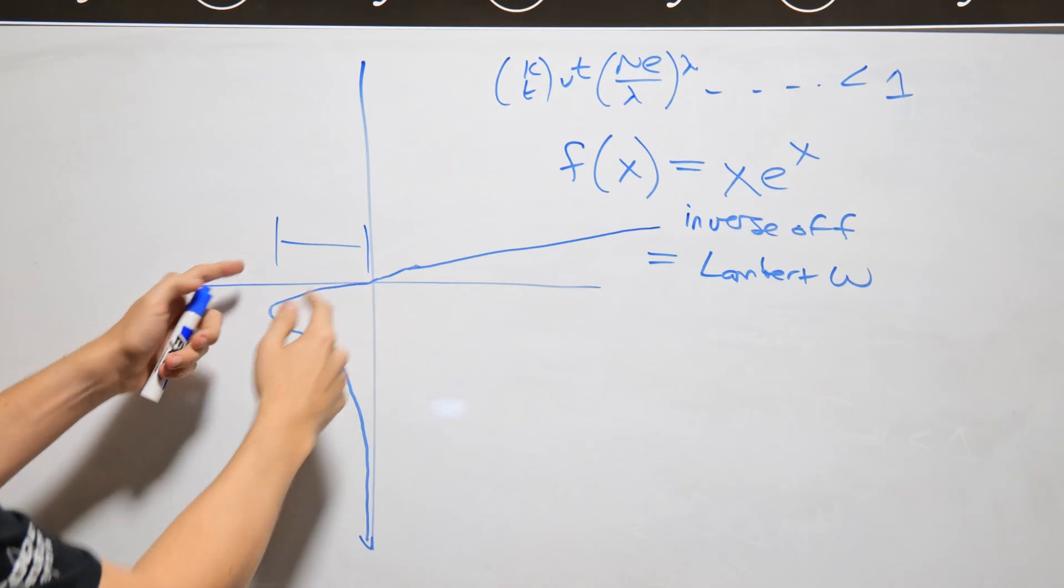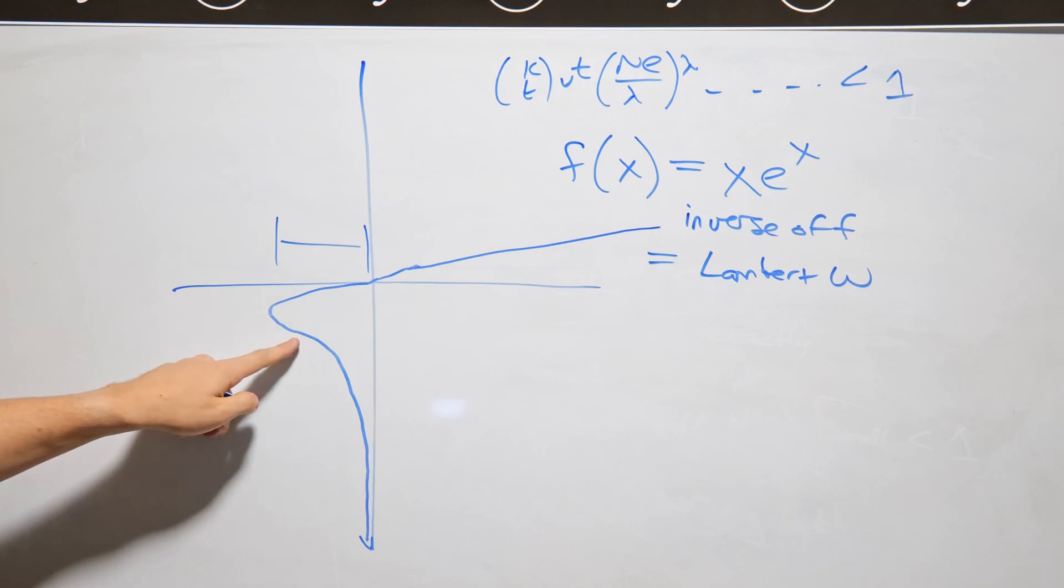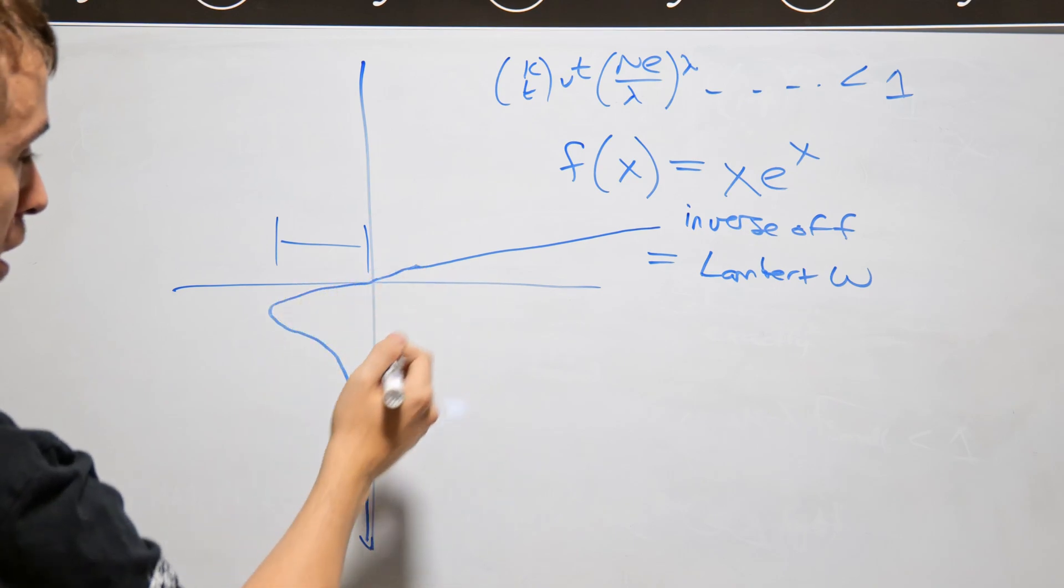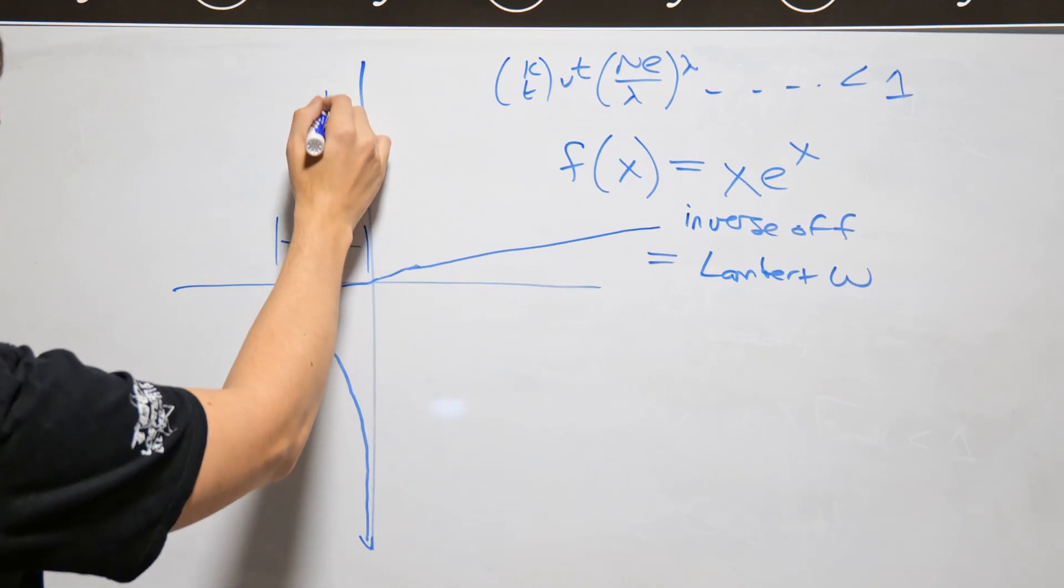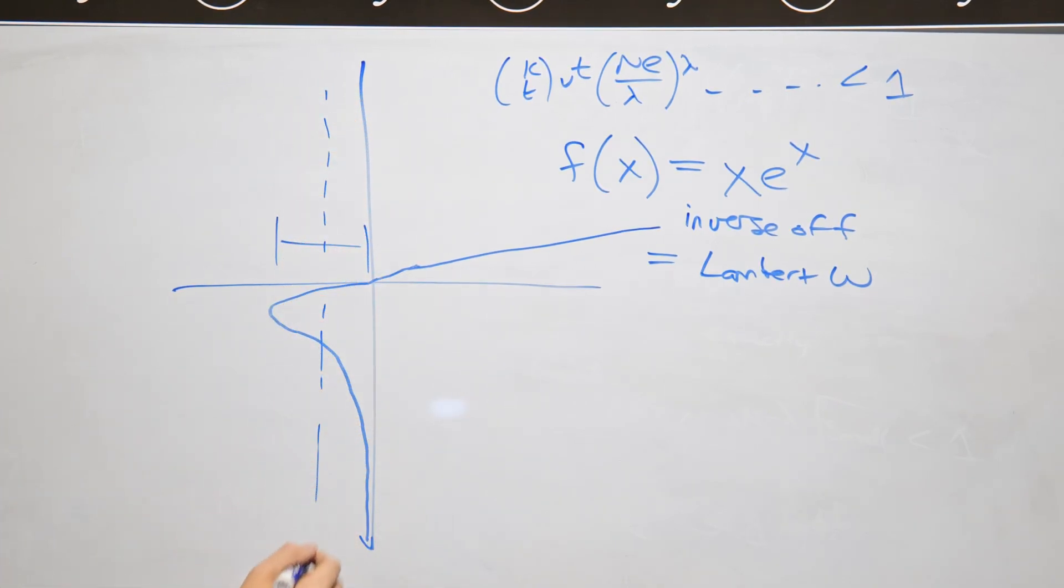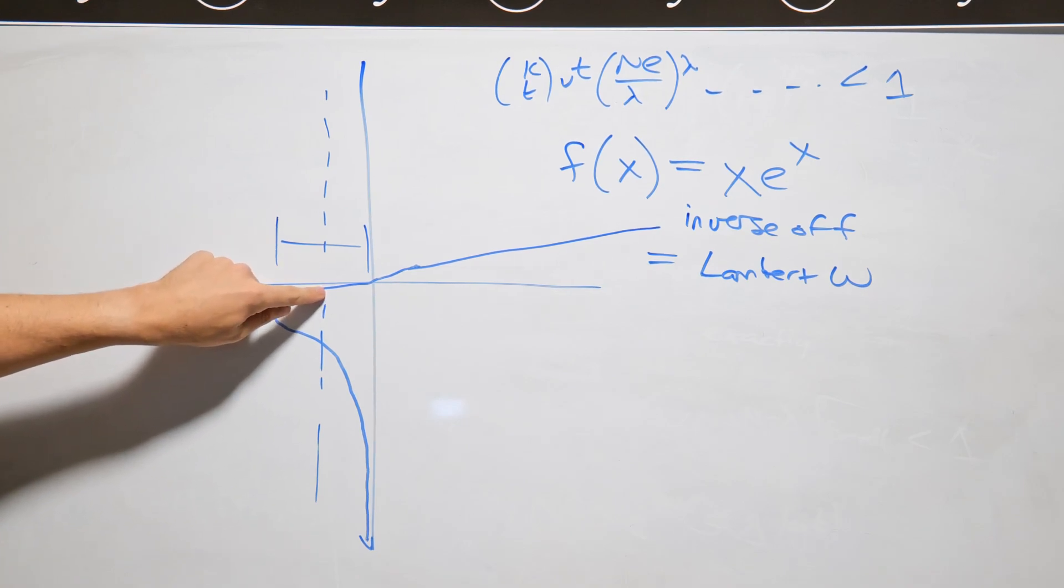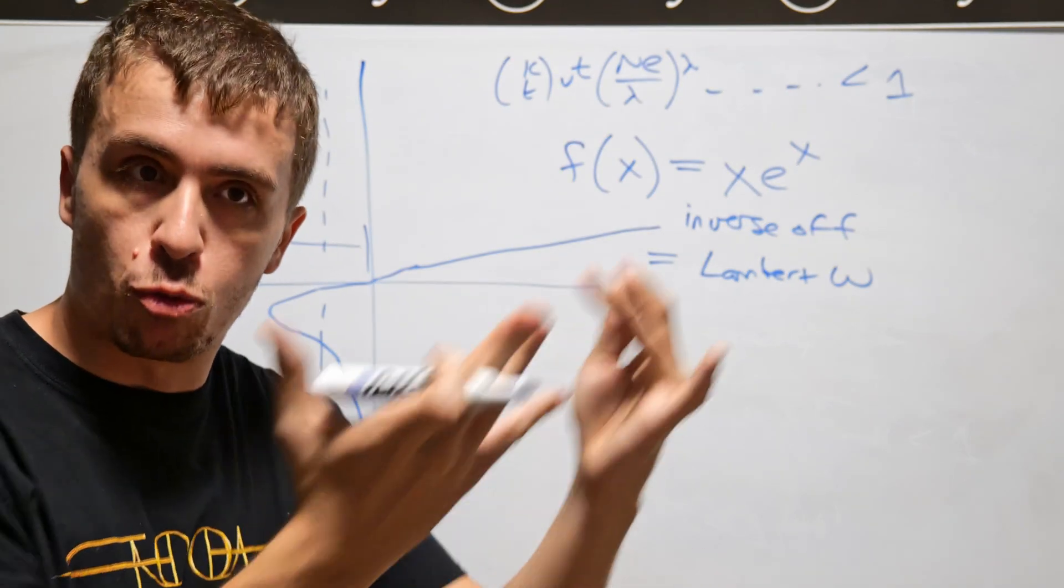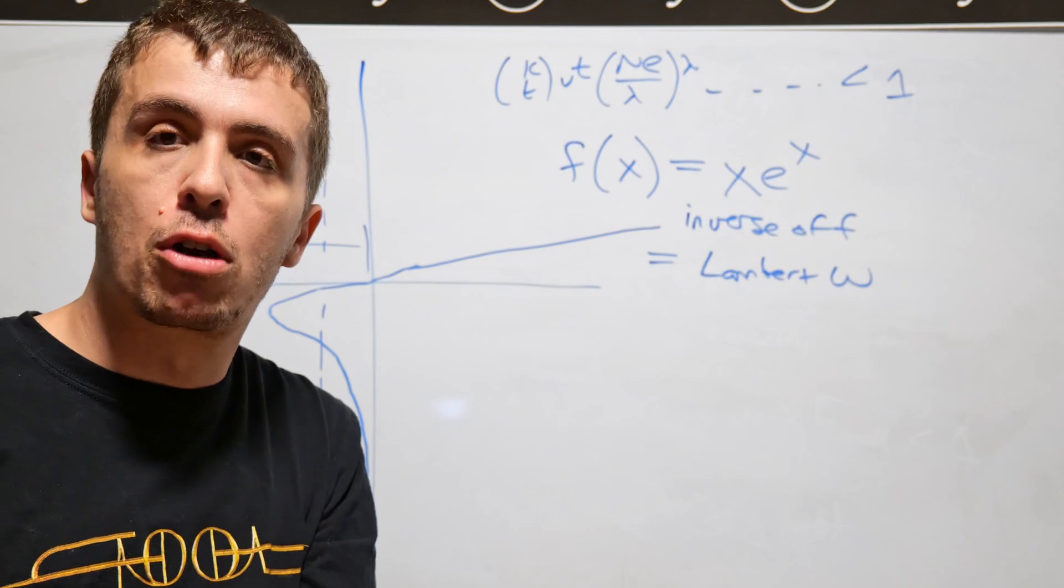And so what you can immediately see is that if we have some particular value for w, which is going to be over here, so something like this right here, what you'll see is that you'll have a higher solution in the Lambert function and a lower solution. If you have two solutions, it might be really hard to distinguish, well is this one the correct one or is this one the correct one?